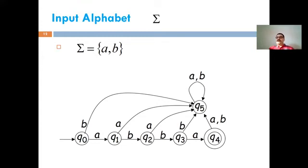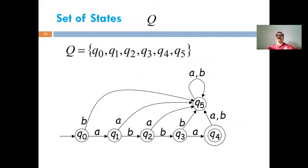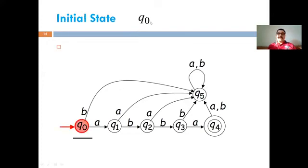In this diagram, the input alphabet sigma consists of small a and small b — we move from one state to another state only by using a or b. Capital Q is the set of all states in the machine. In this machine you can see Q0 to Q5, so there are six states total: Q0, Q1, Q2, Q3, Q4, and Q5. Q0 is the initial state, represented by a circle with an arrow.